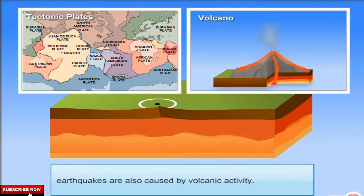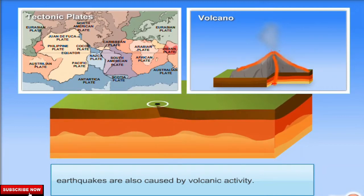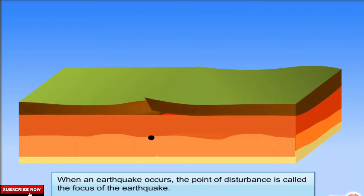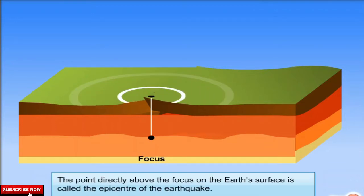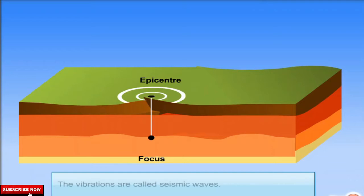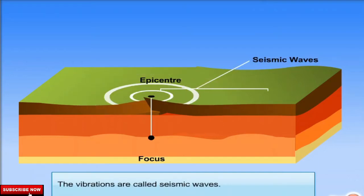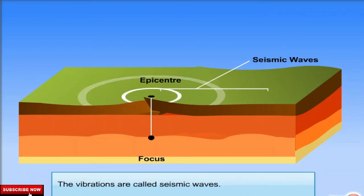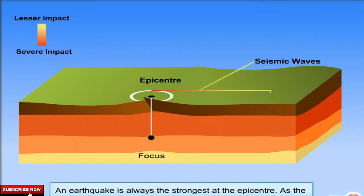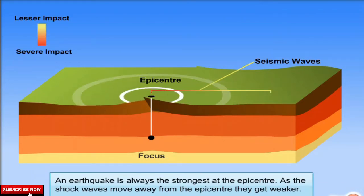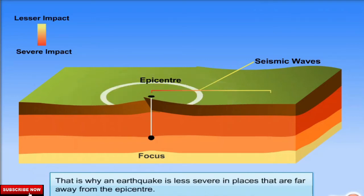Earthquakes are also caused by volcanic activity. When an earthquake occurs, the point of disturbance is called the focus of the earthquake. The point directly above the focus on the earth's surface is called the epicenter. The vibrations are called seismic waves. An earthquake is always the strongest at the epicenter. As the shockwaves move away from the epicenter, they get weaker. That is why an earthquake is less severe in places that are far away from the epicenter.